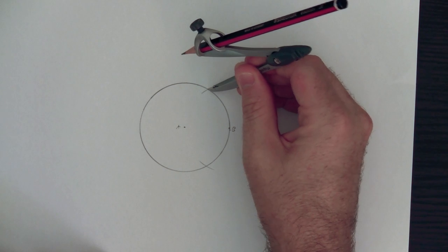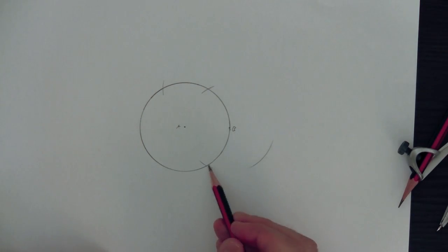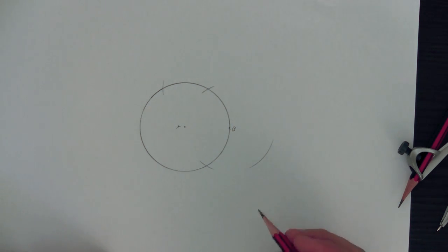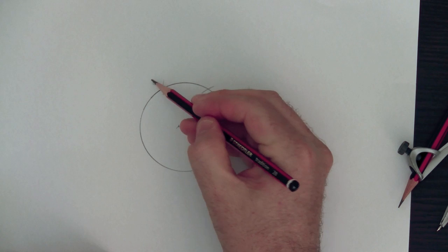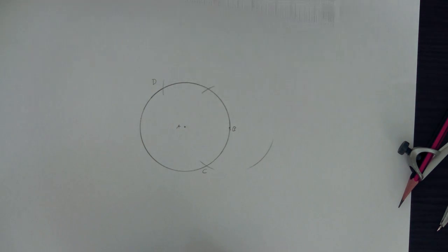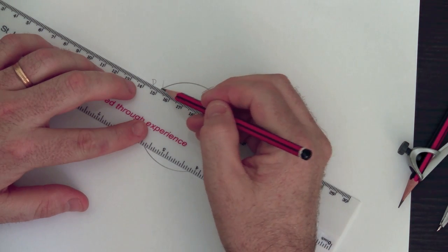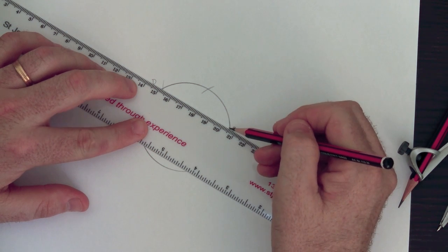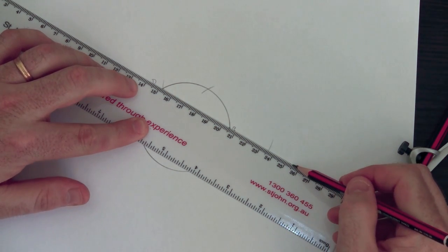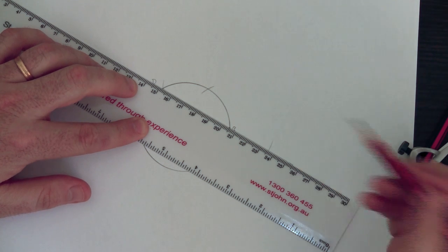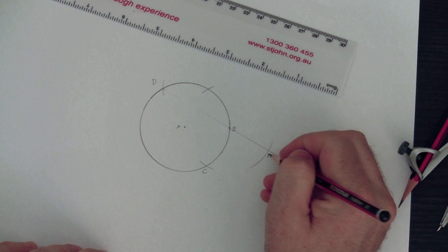I'll put the point of the compass here to find another point out there. So we've got a few points around the circle now. Let's give them names — we'll call this one C, and this one D. Then with the ruler, we can draw a straight line from D through B, and see where it intersects this arc here — just there. Let's call this point E.